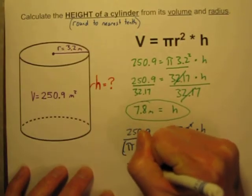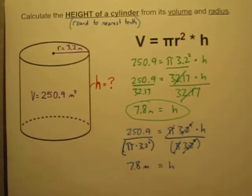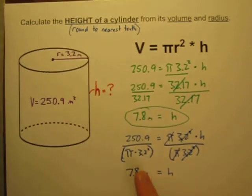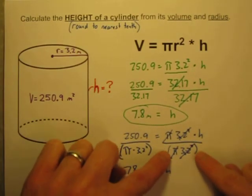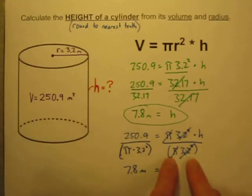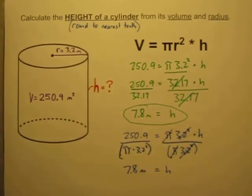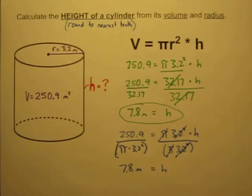7.8 meters. That way, I think, works better. It avoids rounding errors altogether, but somehow, when I tell my students to divide by both sides and put parentheses around here, somehow they just don't really get what they're doing, and it doesn't seem to click with them like what they do here.